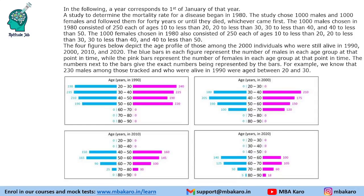Hello everyone, welcome to Aptitude Jab. This set from CAT 2022 Slot 3 DILR says that in the following year corresponds to 1st of January of that year. So all these dates mean 1st of January.